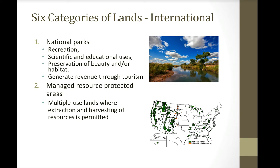The second type of internationally recognized lands are managed resource protected areas. These are considered multiple use lands where people can extract resources and harvest timber, as well as use the land for recreation. The United States National Forest land is an example of that, shown in green on the map, with national grassland shown in orange.